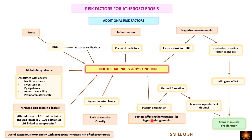Factors affecting hemostasis, like hyperfibrinogenemia, cause platelet aggregation and thrombus formation. Activated platelets release factors that damage the endothelium. Once a thrombus forms, the body breaks it down, but the breakdown products cause smooth muscle proliferation. In atherosclerosis, we have not only lipid accumulation but also smooth muscle proliferation, and this is one cause of that.